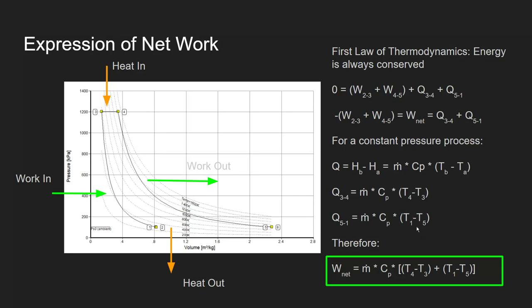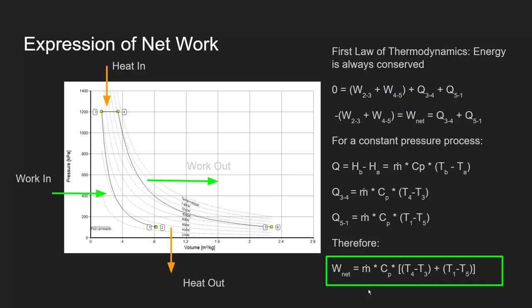Plugging these expressions for heat addition and heat rejection back into the expression for net work, we're left with: Ẇ_net = ṁ · Cp · [(T₄ − T₃) + (T₁ − T₅)]. Mass flow and Cp are constants, and we multiply by the sum of the temperature differences during heat addition and rejection. This is the net work our system produces.